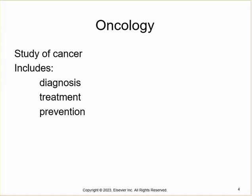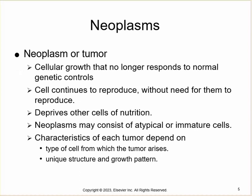Oncology is the study of cancer — its pathophysiology, diagnosis, prevention, and treatment all fall under this umbrella term, and specialists are called oncologists. A neoplasm, or tumor, is unregulated cellular growth — almost like a combination of hyperplasia, metaplasia, and dysplasia. The cell no longer responds to normal genetic controls and reproduces when there's no need, with the cell life cycle shortening considerably and cells spending a lot of time in mitosis.